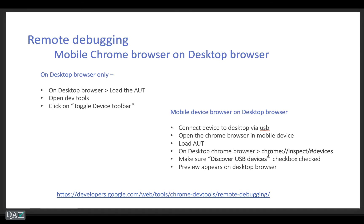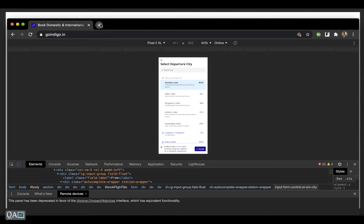In some cases, if you don't want to use that approach, we have the remote debugging option. For instance, there are some applications that only work on real devices, or there may be a restriction where you can't access them in the desktop browser, and you want to preview that mobile view — because real devices can differ from simulators in some cases. So let me reset and open the browser again to demonstrate.